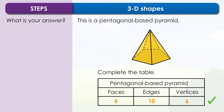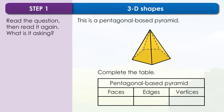Let's see how to reach this answer using the four steps to success. The question is asking you to find the number of faces, edges and vertices on a pentagonal-based pyramid.